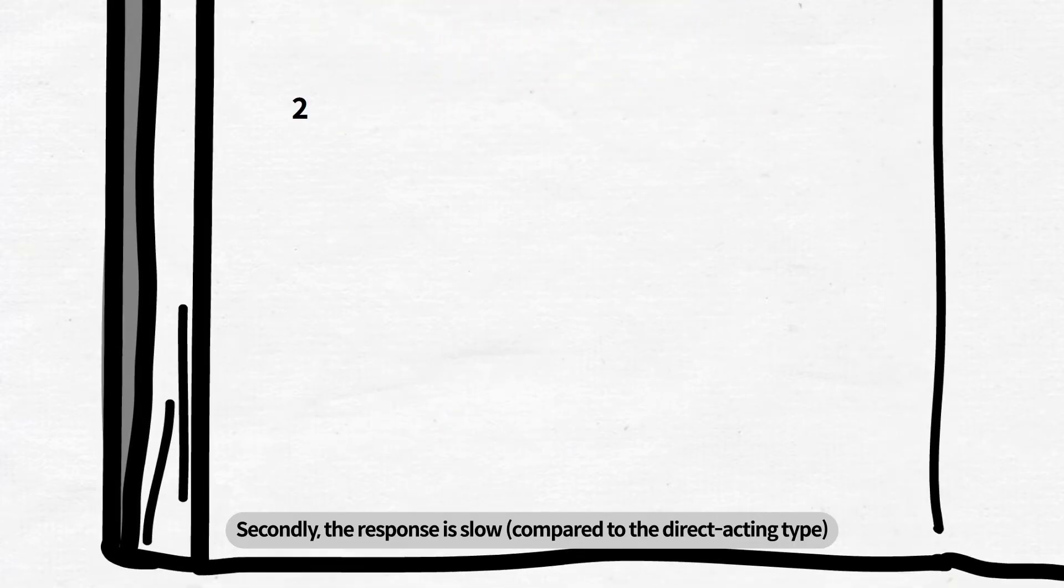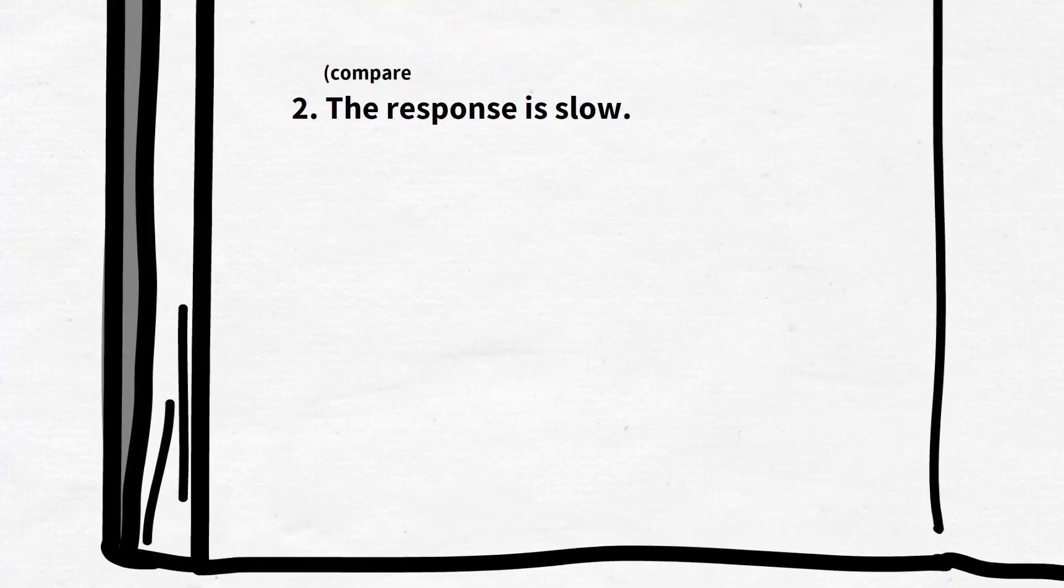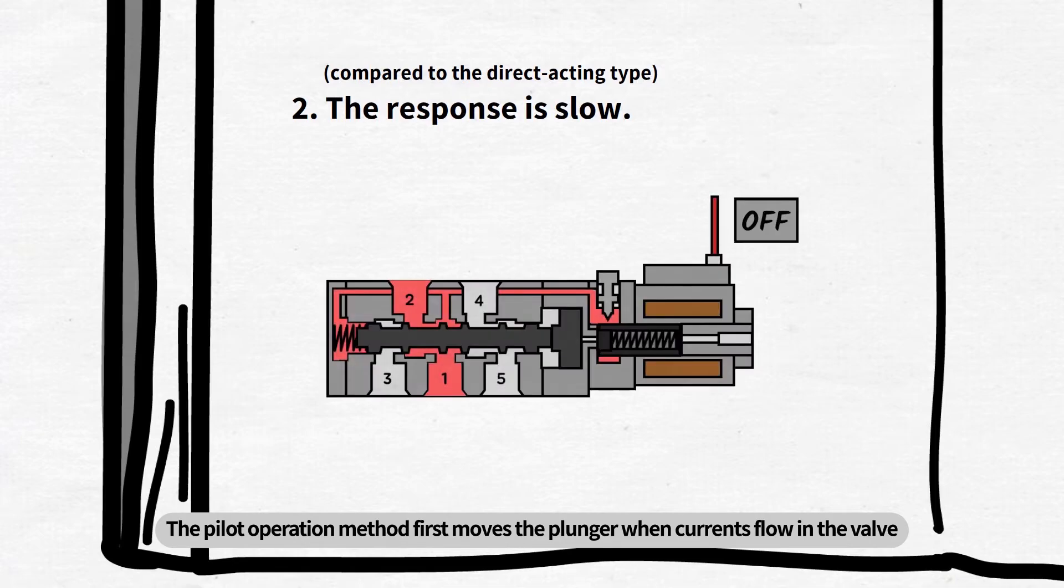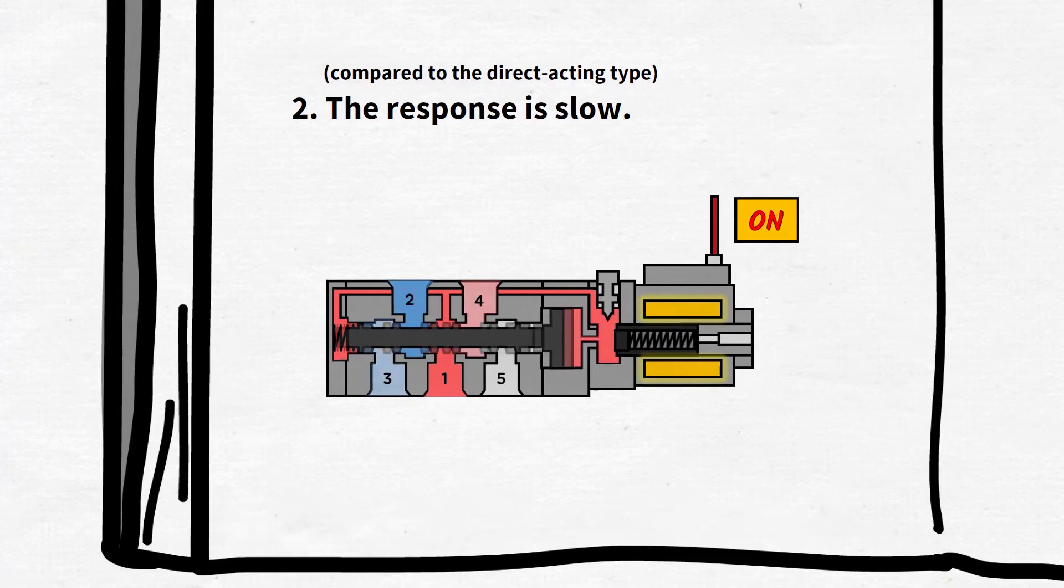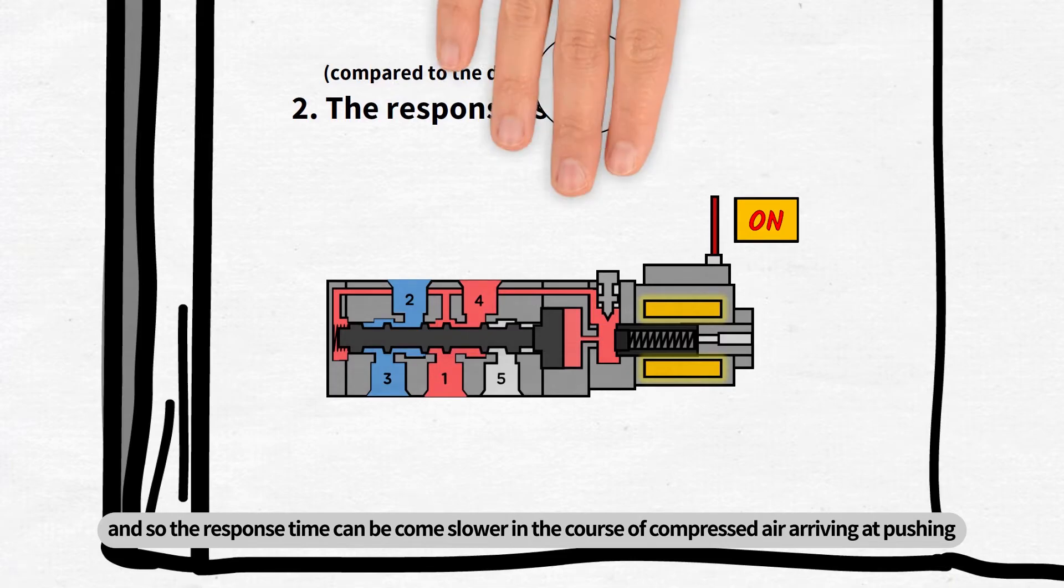Secondly, the response is slow. The pilot operation method first moves the plunger when currents flow in the valve, and then the supplied compressed air pushes the piston and spool. And so the response time can become slower in the course of compressed air arriving at pushing.